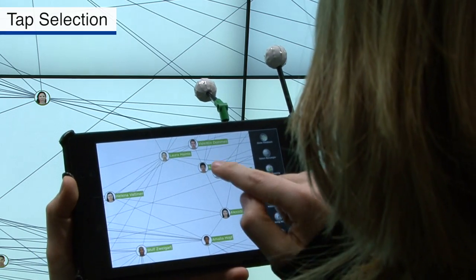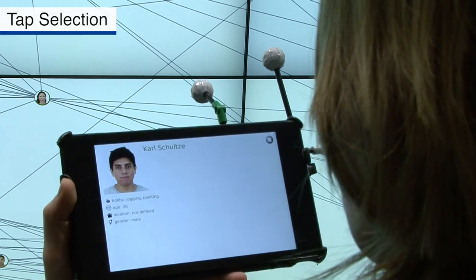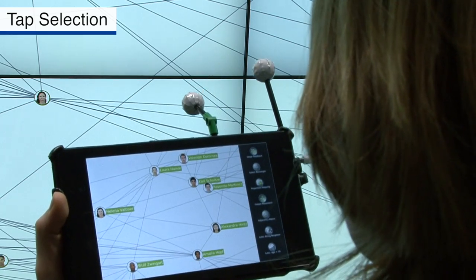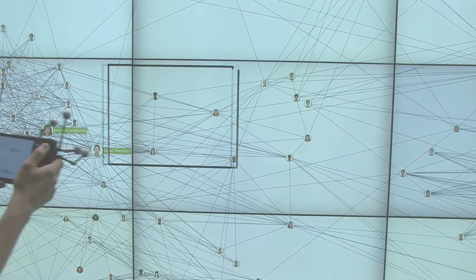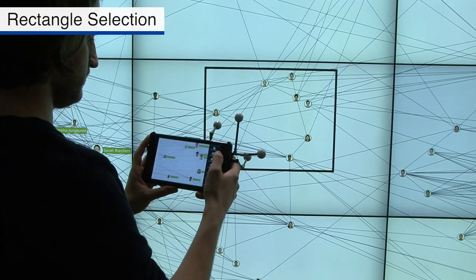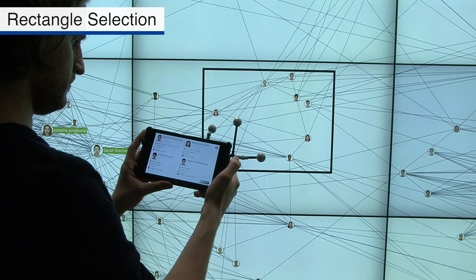It is possible to tap elements on the mobile to select individual nodes. In addition, we also propose a rectangle selection of all elements currently visible on the mobile.